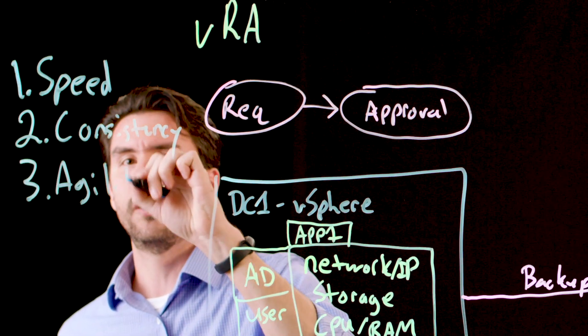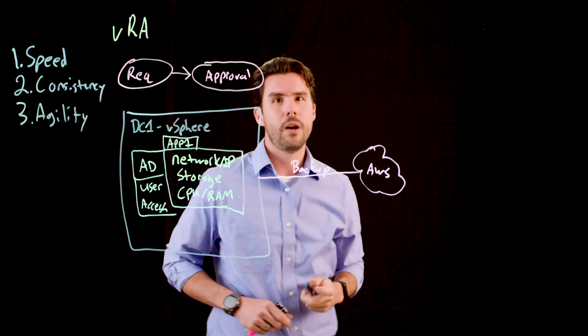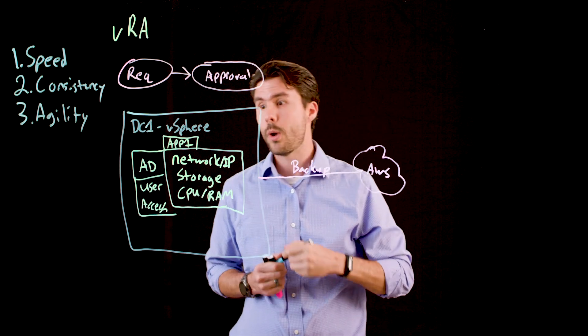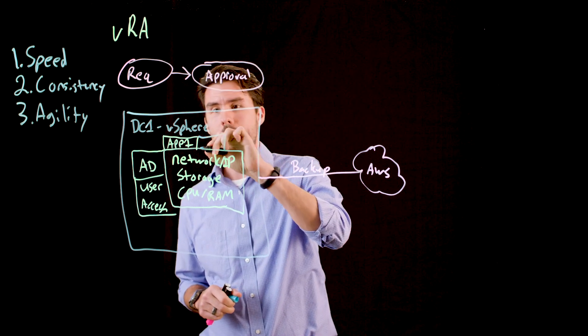Third up is agility. Now, agility can show itself in a lot of different ways. Maybe it's a rollout of a new virtual machine operating system, or maybe you have a new application. Put app two up here.